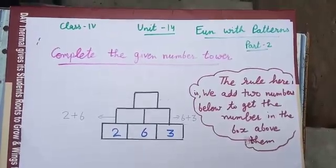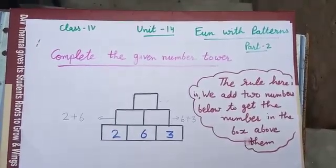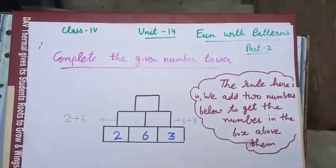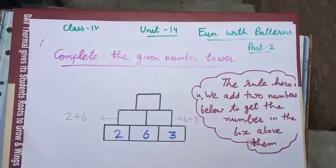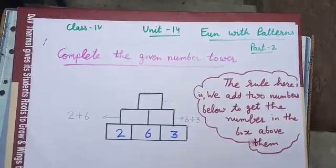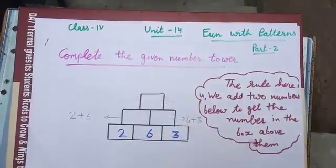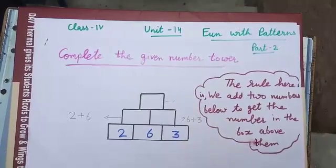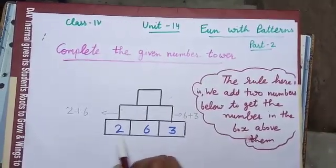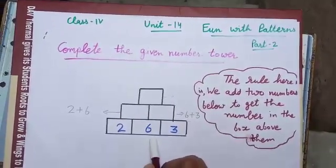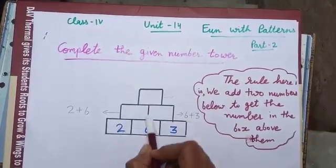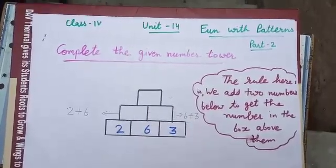Hello students, welcome to the virtual class. Today I am going to explain about the number tower. How to complete this number tower? The rule here is we add two numbers below to get the number in the box above them.